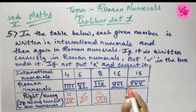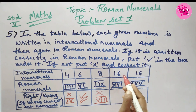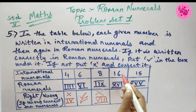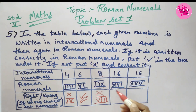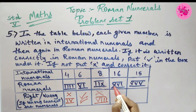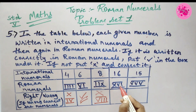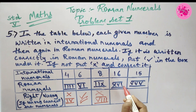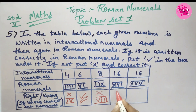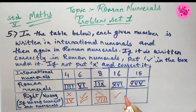Number 4: International numeral 16 is given, and the Roman numerals are XVI (X, V and I). So it is correct.